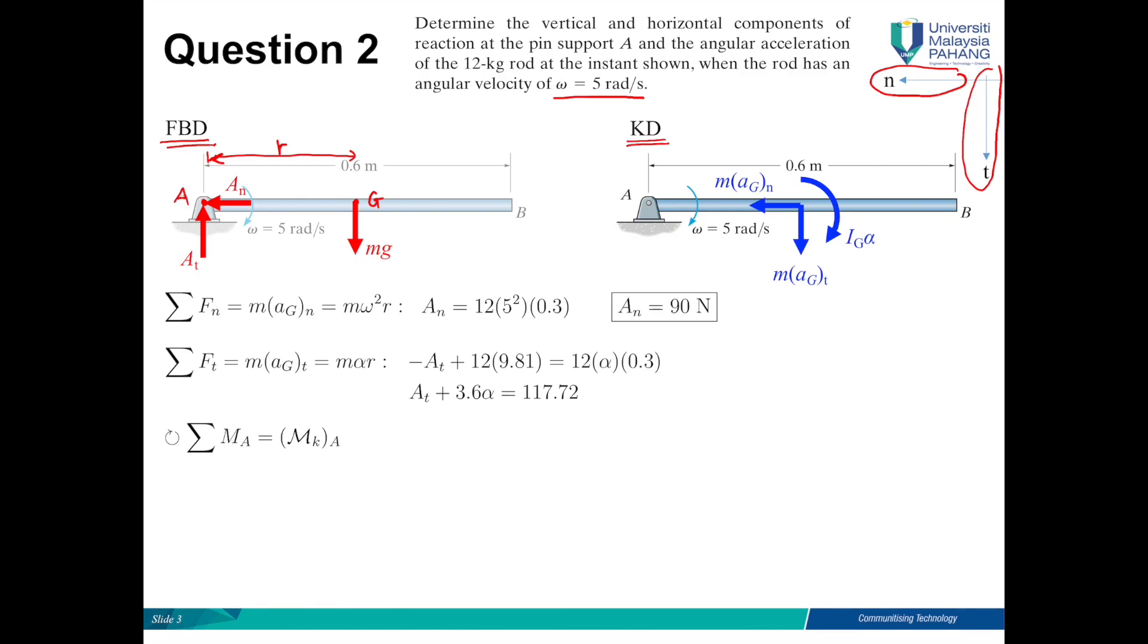So we have learned in the previous lesson that MA is equal to kinetic moment. This is the kinetic moment about A, which is equal to IA alpha.